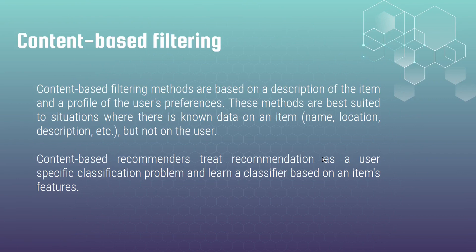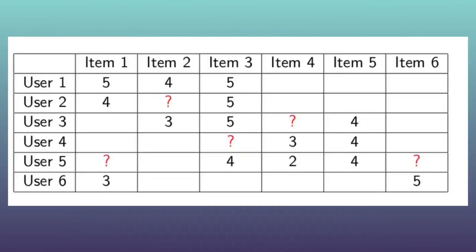Let's return to another type of recommendation system called content-based filtering. Content-based filtering methods are based on a description of the item and a profile of the user's preference. This method is best suited to situations where we know data on an item but not on the user. Content-based recommendation systems treat recommendation as a user-specific classification problem and learn a classifier based on an item's features. For example, items 1, 2, and 3 are comedies with USA origin, and items 4, 5, 6 are action films. The first user definitely likes comedies over actions, so let's find other films with common features and recommend them. That's how it works in simple words.